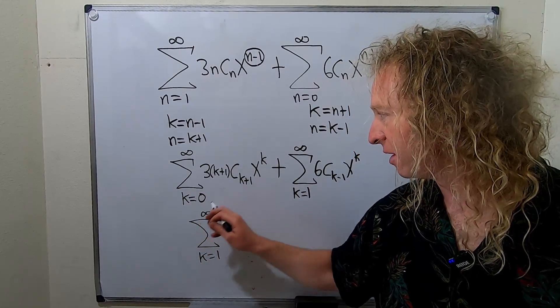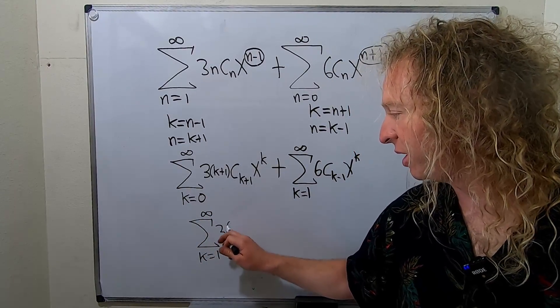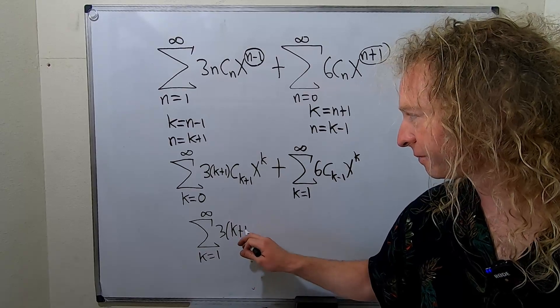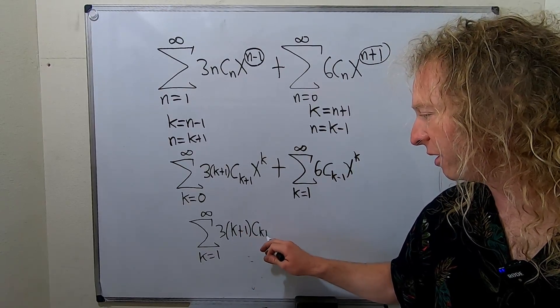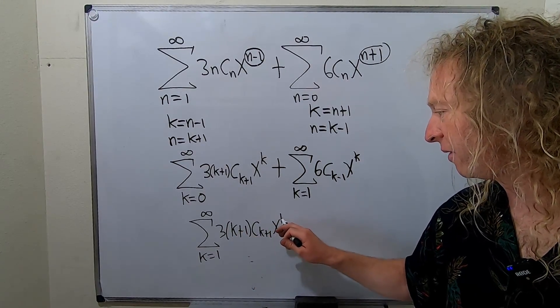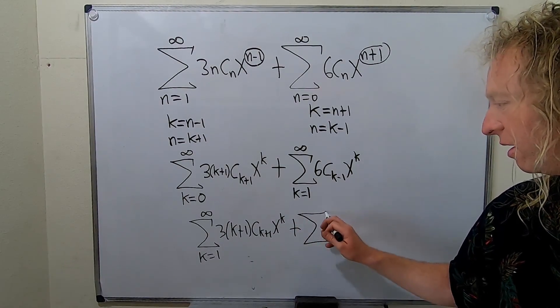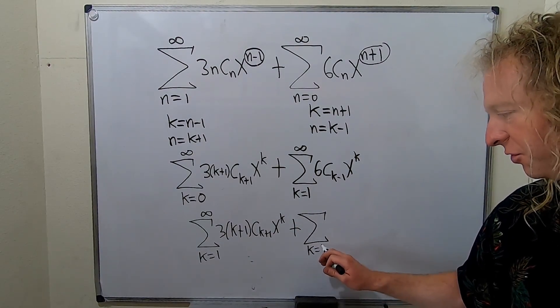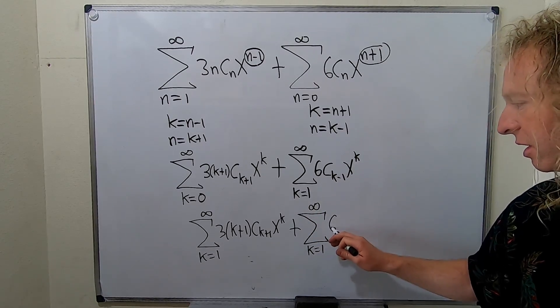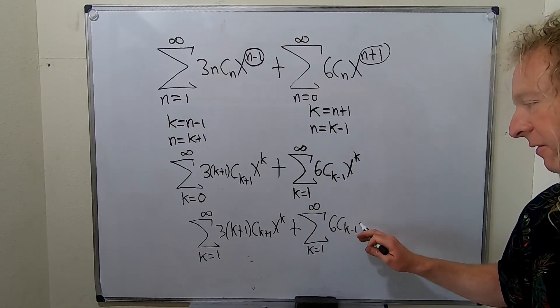I'm going to write it all over again. I'm going to start at 1. So we have 3(k+1) C sub k plus 1 x to the k. So I started at 1 which technically is still wrong, but we're going to fix it. K equals 1 to infinity, 6 C sub k minus 1. I love these problems.